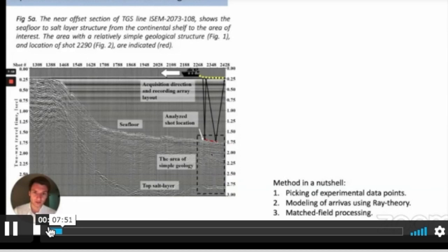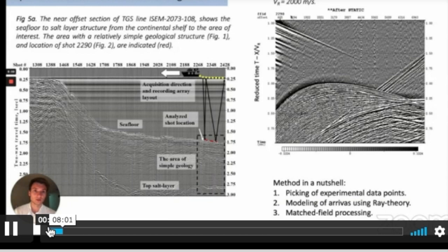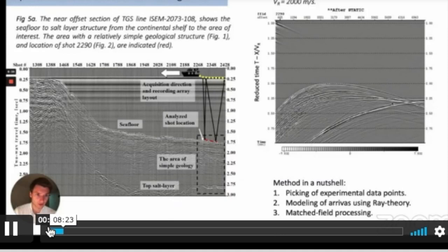This is an example of the shot gather. It's offset versus the reduced time, reduced by 2 kilometers per second. Here is the direct signal coming. Here is the seafloor reflection coming. Here is refraction from the salt. If we reduce the gain, we can more easily see sub-seafloor reflection, which is simply reflection from this area. And this is refraction from the sub-bottom. This is refraction from this layer. If we assume that here is the velocity gradient in the bottom. We picked points from this dataset. We simulated models for different parameters. And we compared them to see which situation will give us the best match.